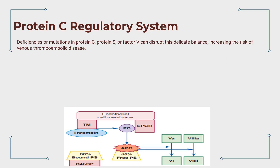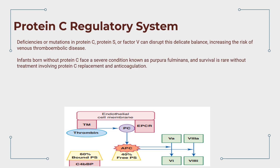This dance of proteins has significant clinical implications. Deficiencies or mutations in protein C, protein S, or factor V can disrupt this delicate balance, increasing the risk of venous thromboembolic disease. Infants born without protein C face a severe condition known as purpura fulminans, and survival is rare without treatment involving protein C replacement and anticoagulation.